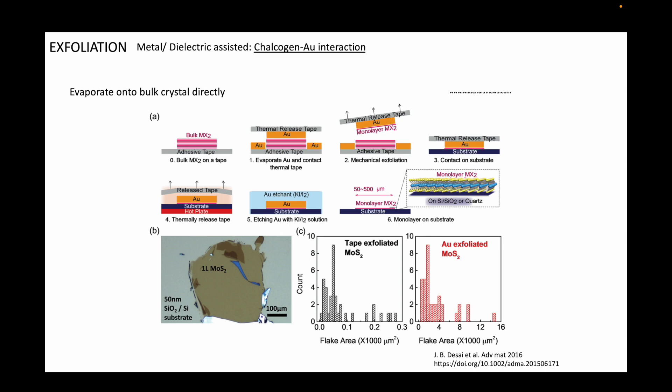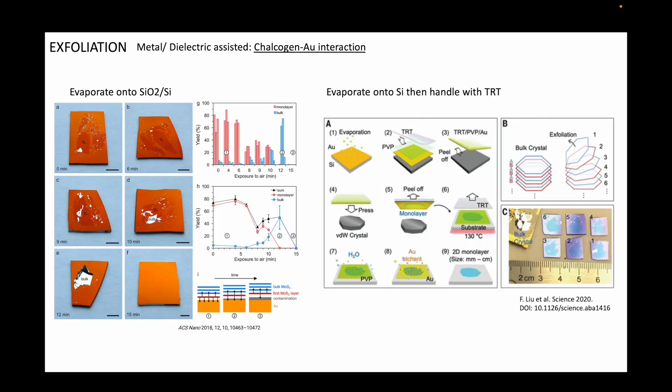Next is a variation of the same method, but instead of evaporating the gold onto the bulk crystal directly, which has been shown to cause a lot of defects in TMDs, the gold is evaporated onto an atomically flat silicon substrate, and then the tape is brought into contact. In the left paper, they evaporated only a few nanometers of gold on top of silicon with an adhesion layer, and directly exfoliated onto the gold surface. What they found out was that interestingly, within a few minutes of being exposed to air, the adhesion between the gold surface and the TMDs quickly diminished.